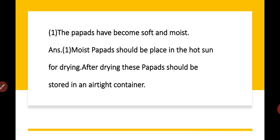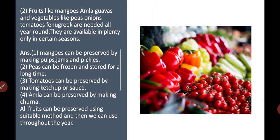The next question is: fruits like mangoes, amla, guavas, and vegetables like peas, onions, tomatoes, and fenugreek are needed all year round. They are available in plenty only in certain seasons.